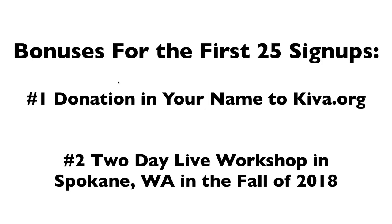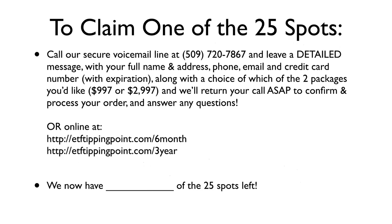There are some bonuses for the first 25 sign-ups: we'll make a donation in your name to Kiva.org — an organization that helps entrepreneurs in third-world countries — and you'll get tickets to a two-day live workshop in Spokane, Washington in the fall of 2018. To claim one of the 25 spots, call our secure voicemail at 509-720-7867 and leave your full name, address, phone, email, credit card number with expiration, and which package you prefer. Or order online at etftippingpoint.com/six-month or etftippingpoint.com/three-year.